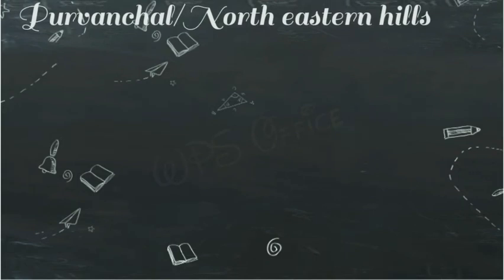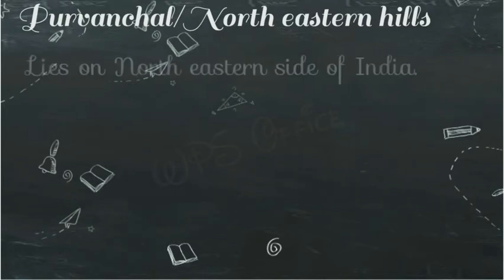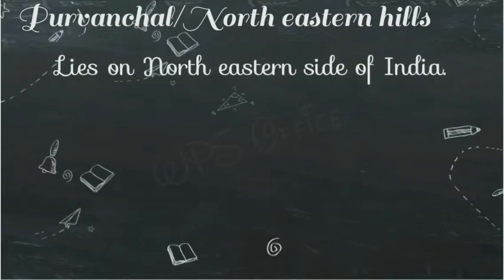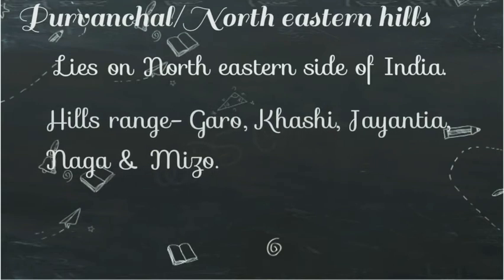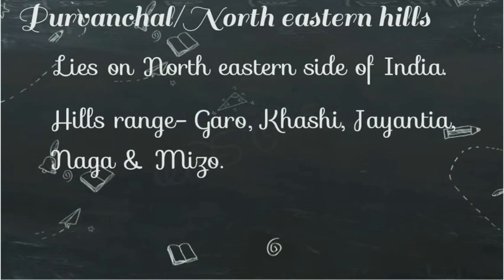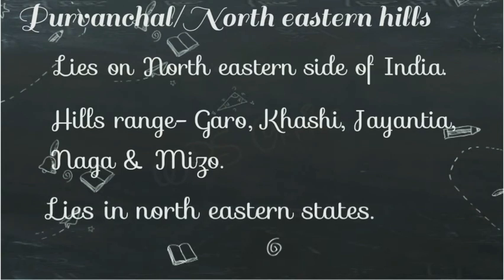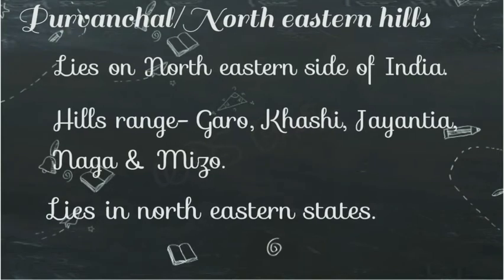And the third range is Purvanchal and North Eastern Hills. Purvanchal, अरुणाचल प्रदेश यानि कि हमारे भारत के उत्तरी पूर्वी राज्यों को कवर करता है — lies on the North Eastern side of India. इसमें बहुत सारी hill ranges हैं जैसे Garo, Khasi, Jaintia, Naga, और Mizo। These are the major ranges in the Purvanchal.